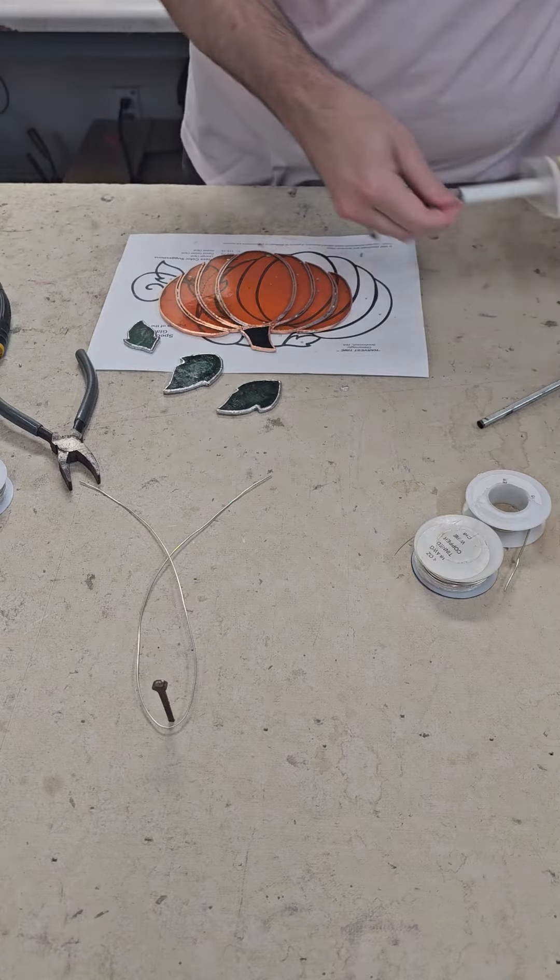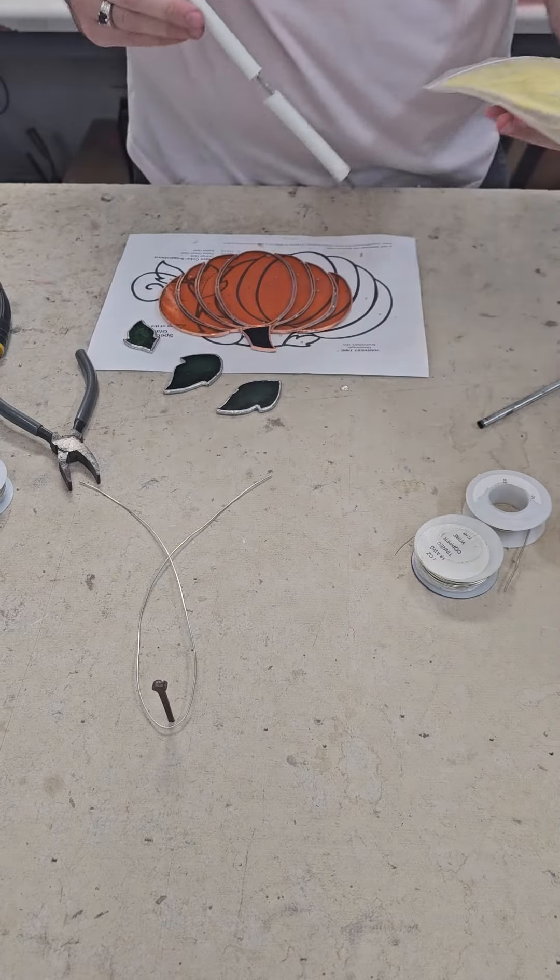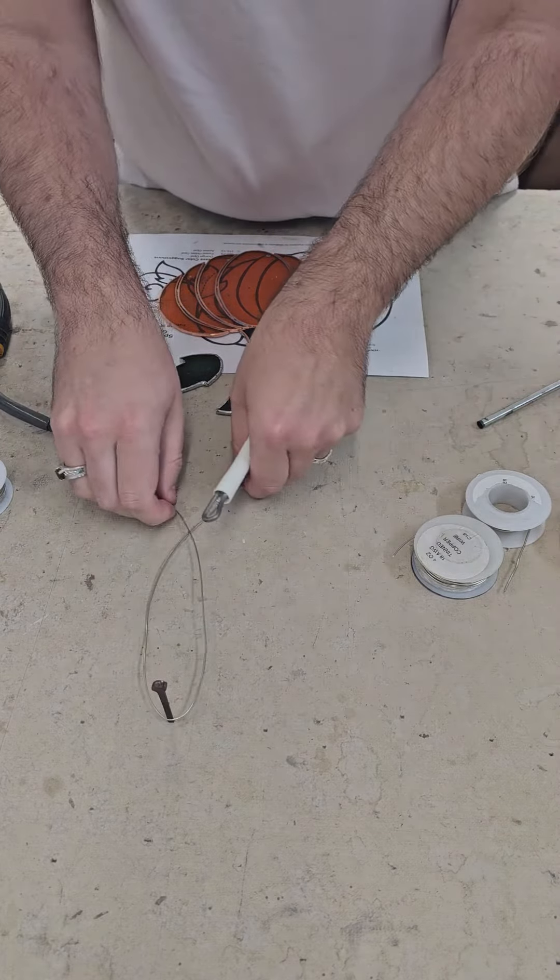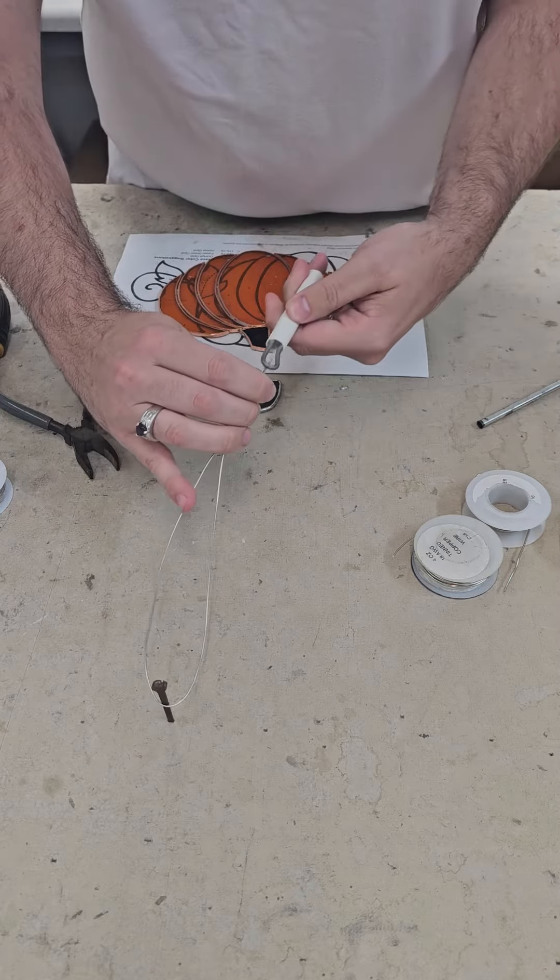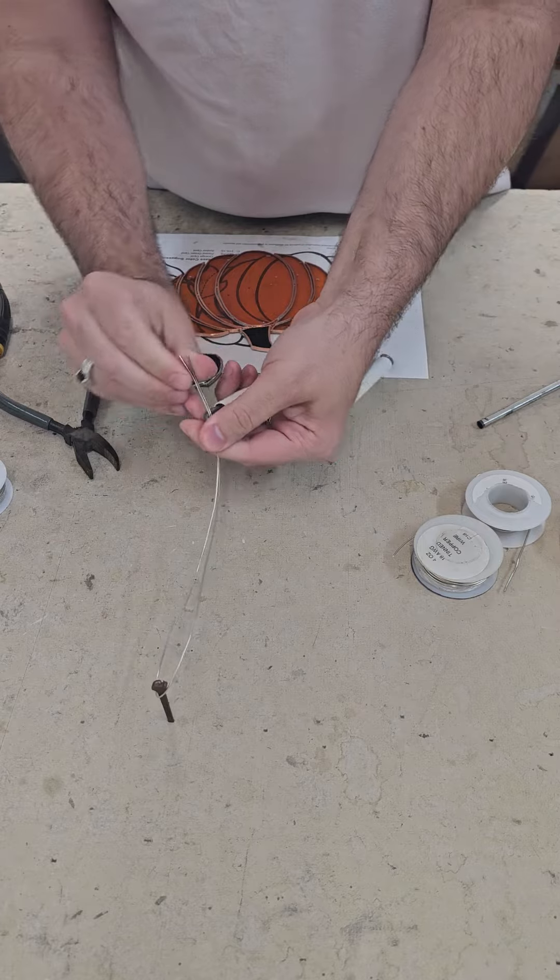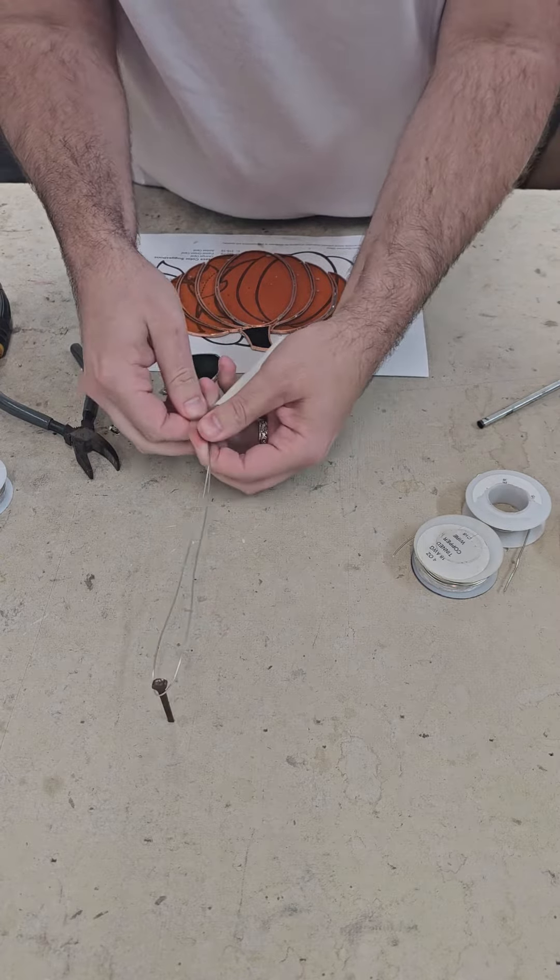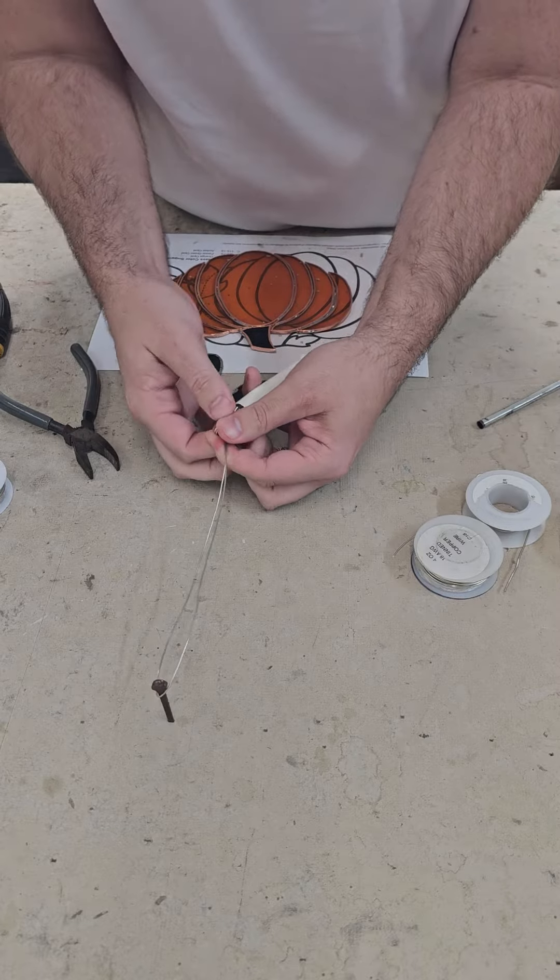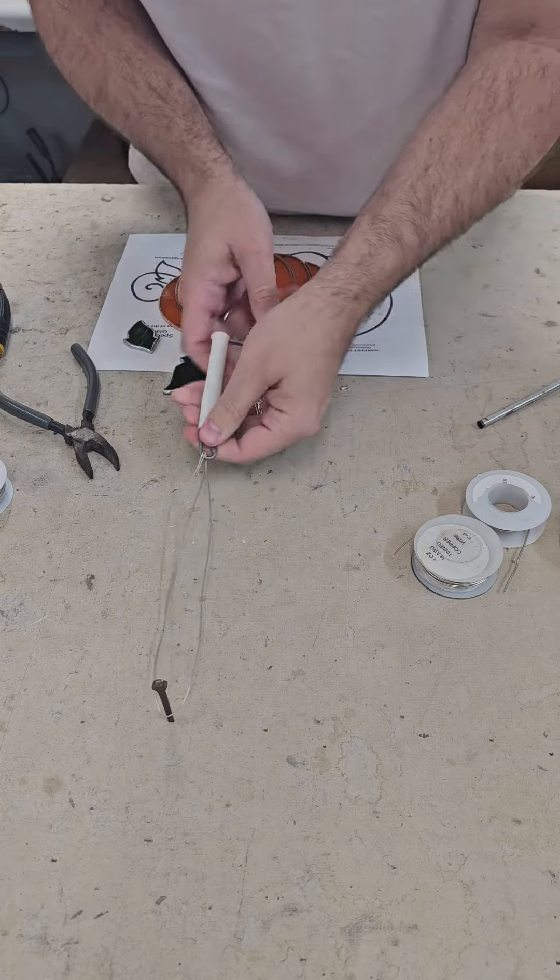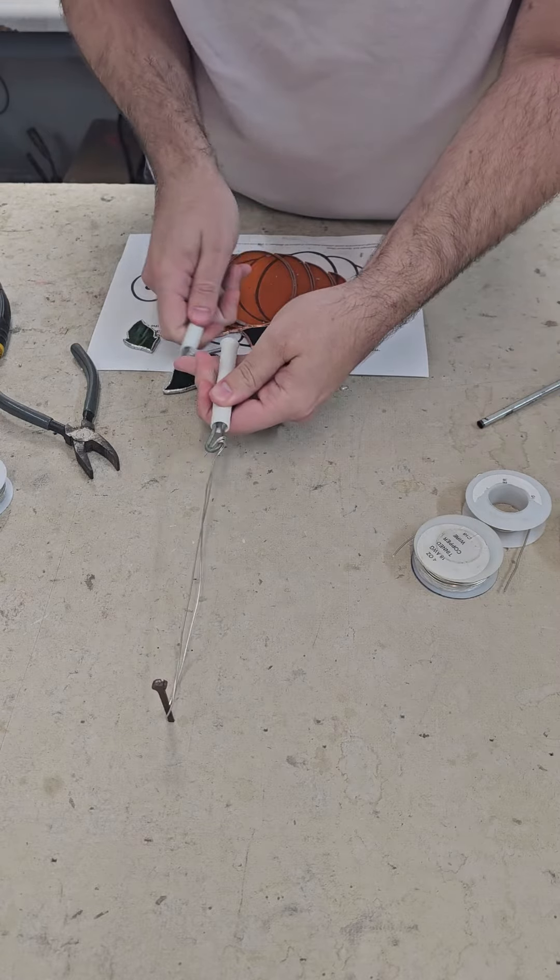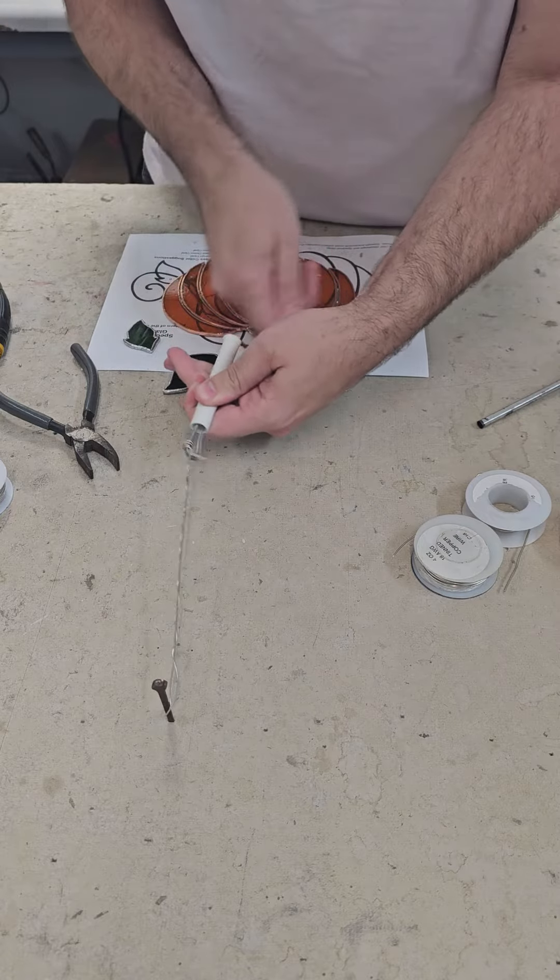You can also use, this is called the Morton Twister. Same concept, except what you do is you go ahead and take the tips here, and you're going to wrap them around one of these loops several times so that they won't move. It's a little bit of effort here. Once you've got them wrapped, you can go ahead and turn it like this, and it's much quicker than a pair of pliers. You can move a lot quicker once you get going.